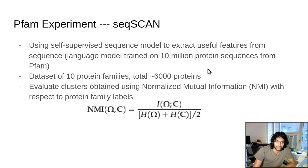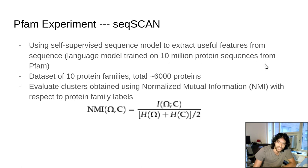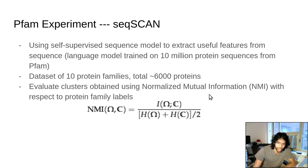The experiment I'm going to be describing has three steps. The first is to extract useful information from sequence using a language model trained on 10 million protein sequences from PFAM. Then we have a dataset of 10 protein families — 6,000 proteins — that we want to cluster into those sequence features. Finally, we evaluate those clusters using NMI, a normalized mutual information measure, with respect to the protein family labels to determine cluster quality.